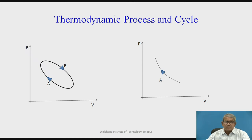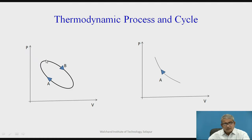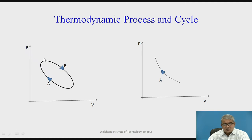When you go for a thermodynamic process and thermodynamic cycle, here in graph 1 — the pressure versus volume graph — it is given that it is one cycle. At the arrow, it is state 1. It moves from state 1 to state 2 through path A. That is called a process. And again, it regains its original character and completes one cycle — one loop. So 1→A→2 and 2→B→1 is called one cycle.